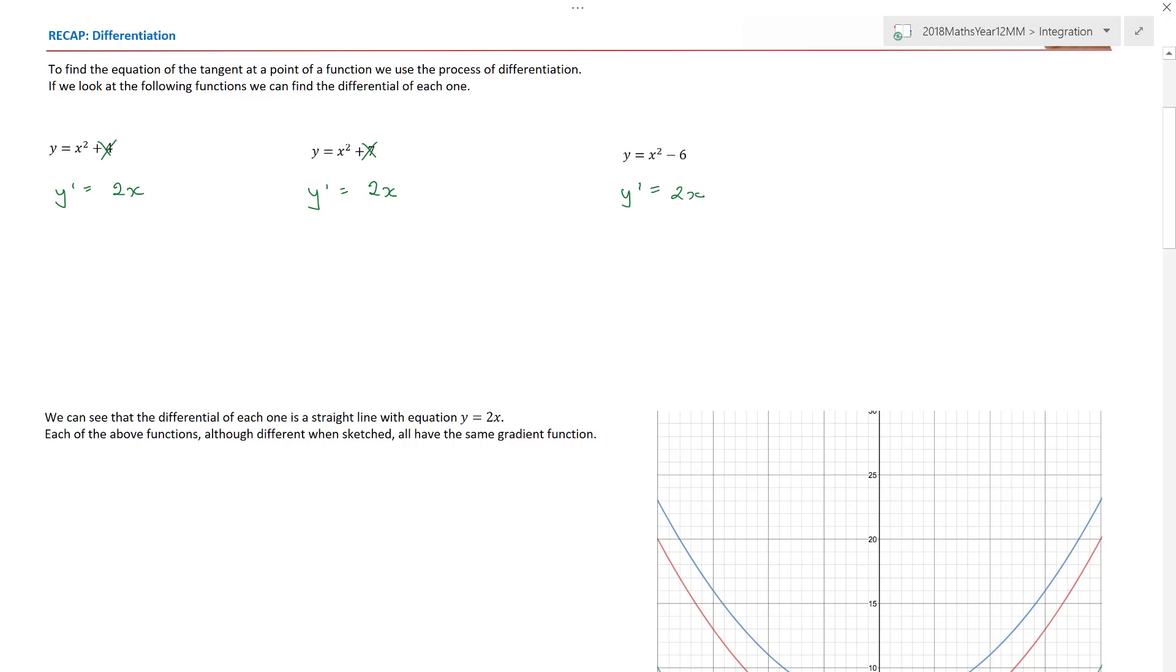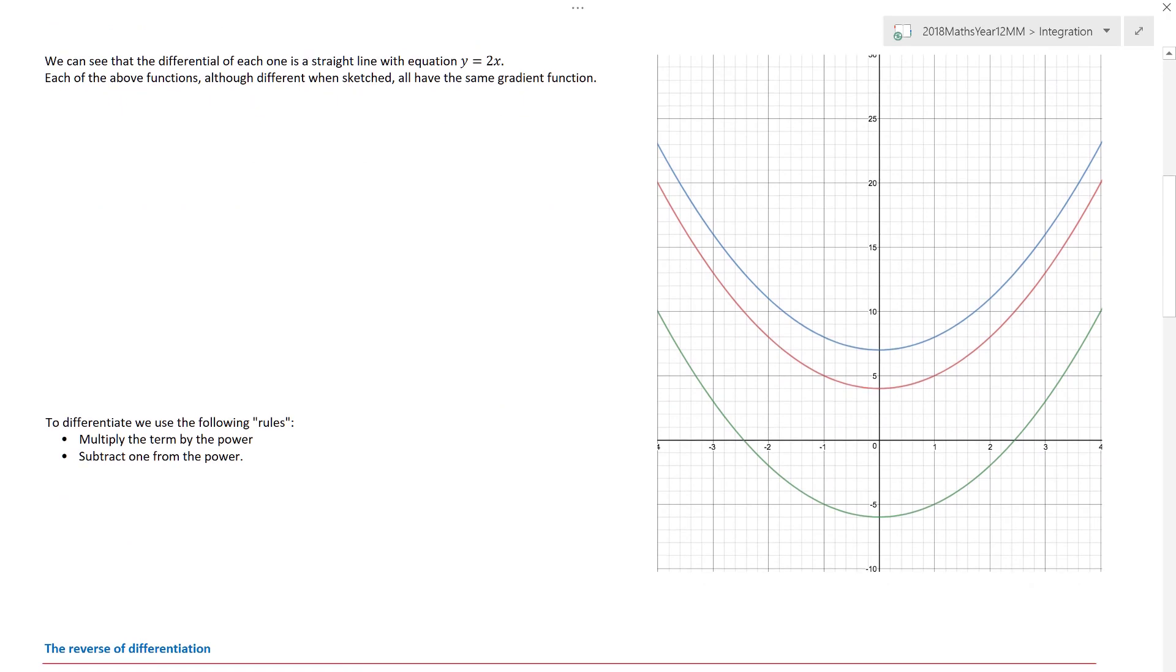Now, that's interesting because what it's suggesting is that those three functions each have the same gradient function. Well, actually, if we sketch those together, it sort of makes sense because all of them were just the same function, that same basic y equals x squared, just translated vertically.